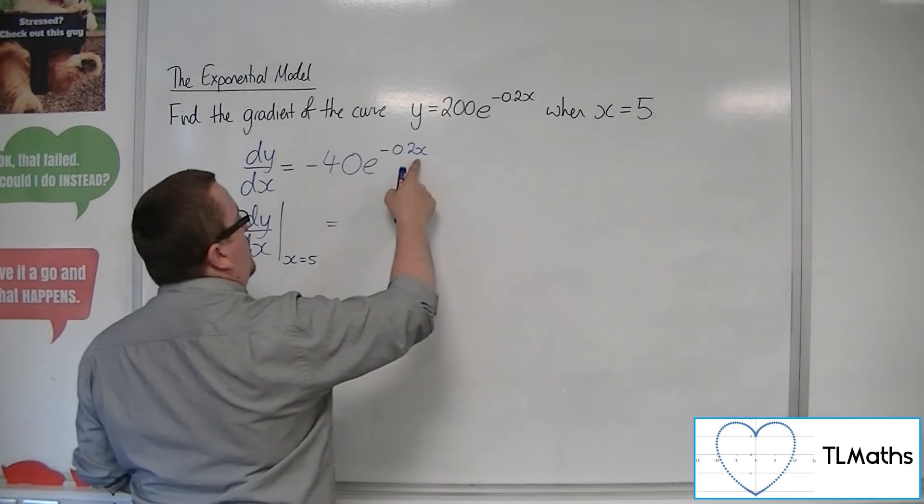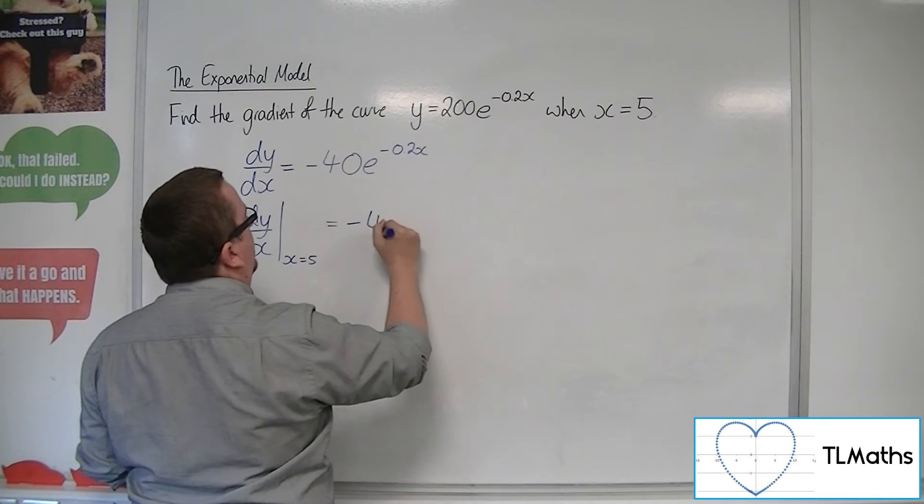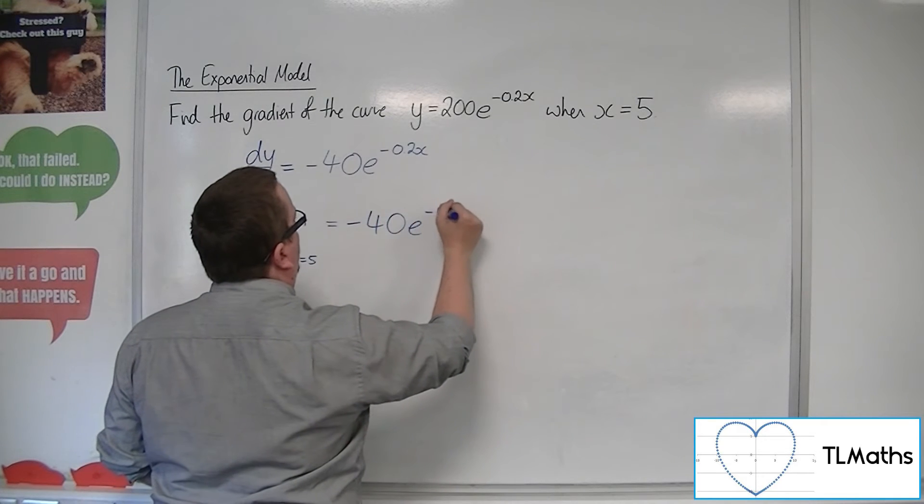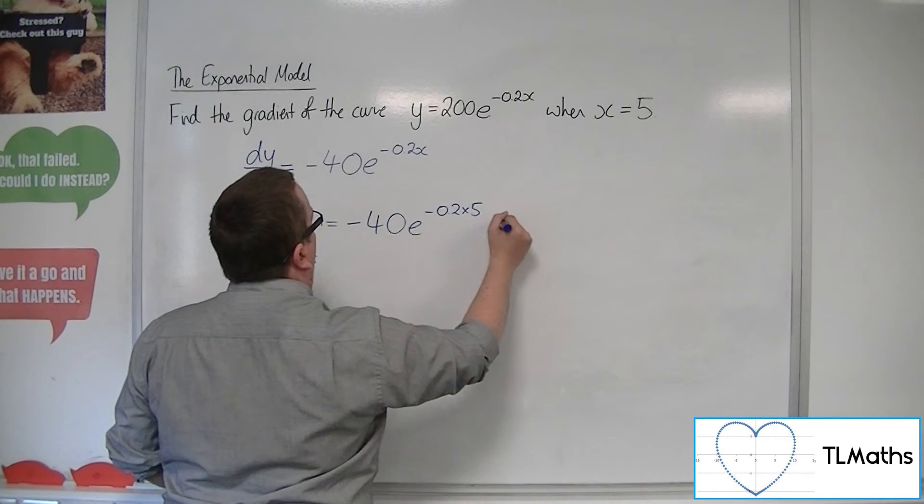So we're going to substitute 5 into this. So minus 40e to the minus 0.2 times 5.